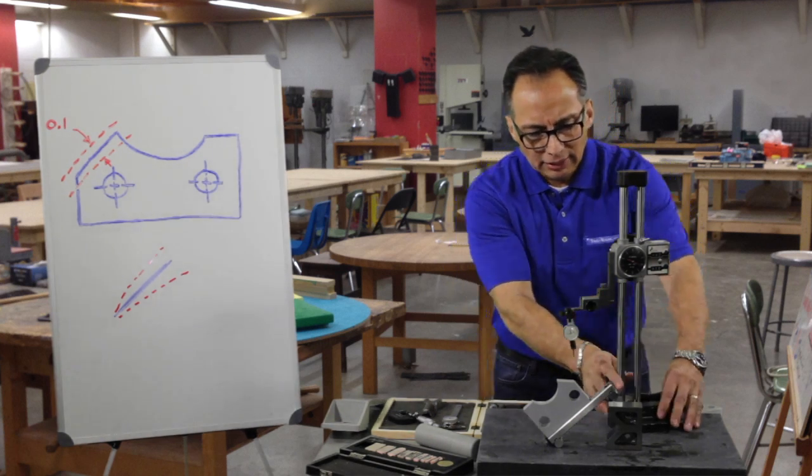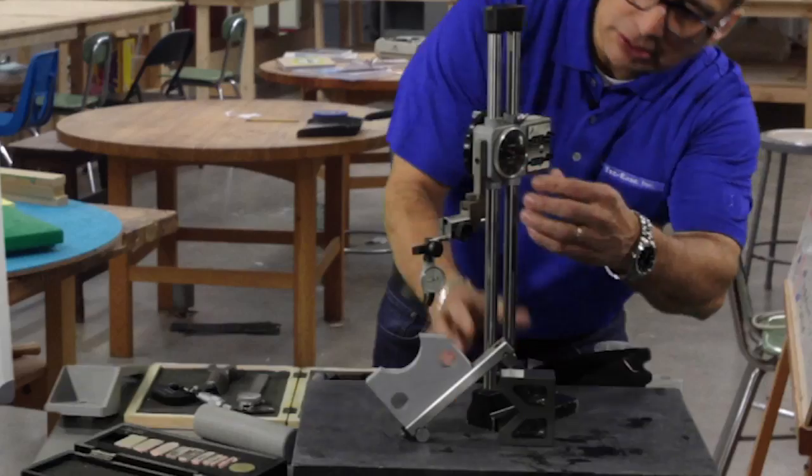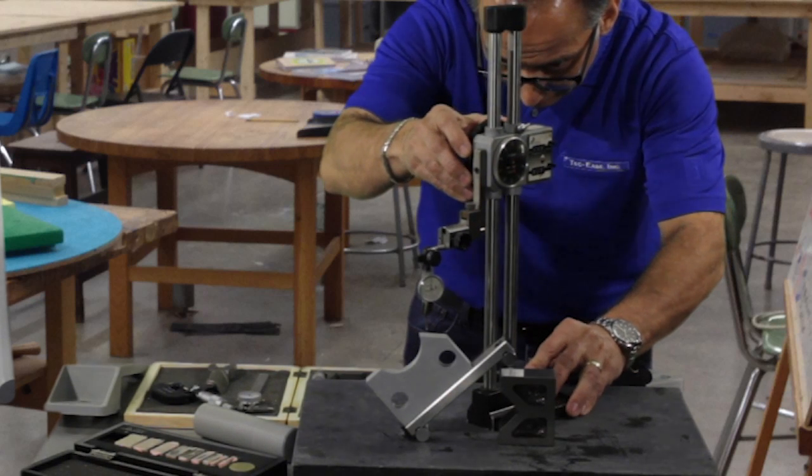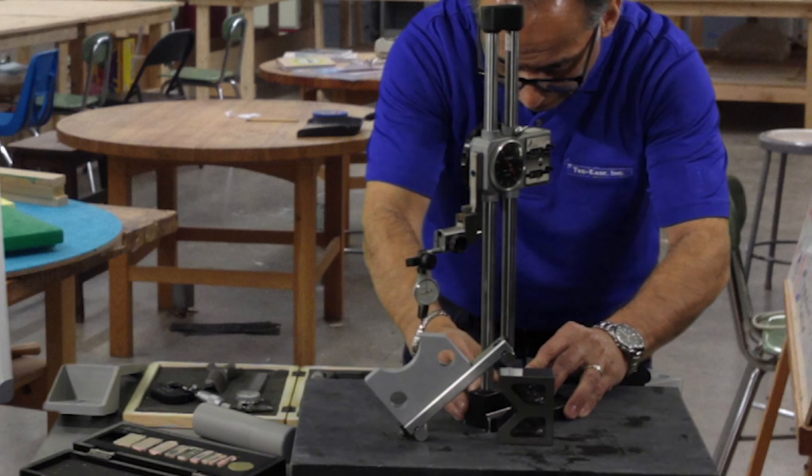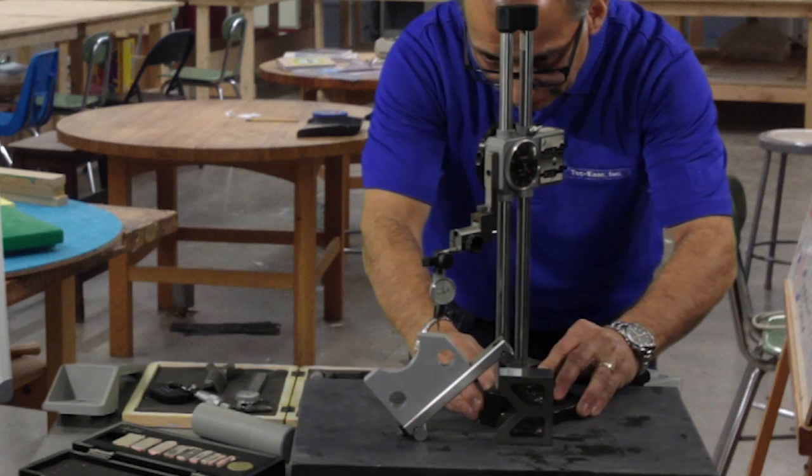And now I can run the indicator and set it right on top and, of course, move the indicator down. And as it touches, I'm going to run the indicator. Now I'm not going to really document anything. This is just demonstrating the method. And so you can see I would run it along the surface.